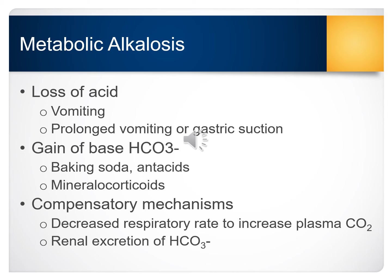Metabolic alkalosis can result from a loss of acid, which can occur from prolonged vomiting or gastric suction for an extended period of time. It can also result from a gain of too much base, such as someone ingesting too much baking soda or antacids, or patients on high levels of mineralocorticoids. The compensatory method for metabolic alkalosis includes a decreased respiratory rate, which increases plasma levels of CO2, and renal excretion of bicarbonate.